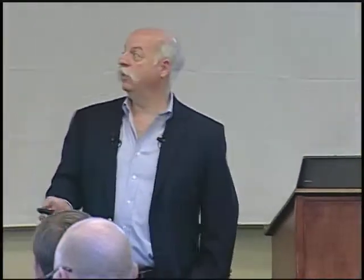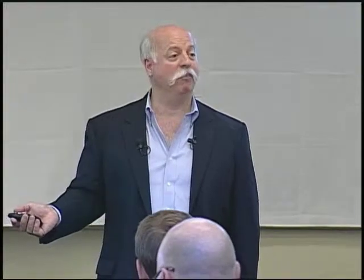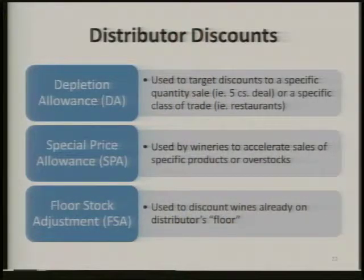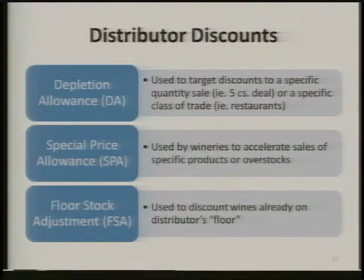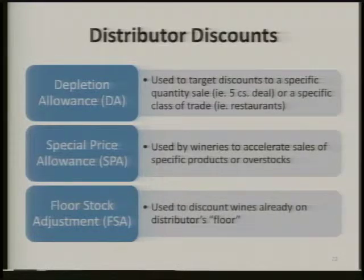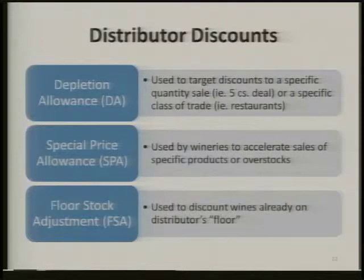Are these typically done by billbacks? Depletion allowances are usually billbacks to the winery, issued in the form of a credit, so the next time you send a bill the distributor just takes a credit — you're not sending checks back and forth. An SPA is generally done by selling at a lower price, giving a discount right on the invoice. Floor stock adjustments are again done as a billback — the distributor bills back the winery for whatever cases were on the floor when the price dropped.